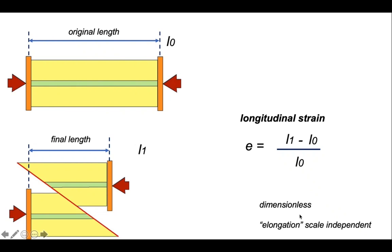Both top and bottom of this relationship have a length scale, which cancel out. The elongation is dimensionless, so it becomes a useful parameter because it's scale independent.